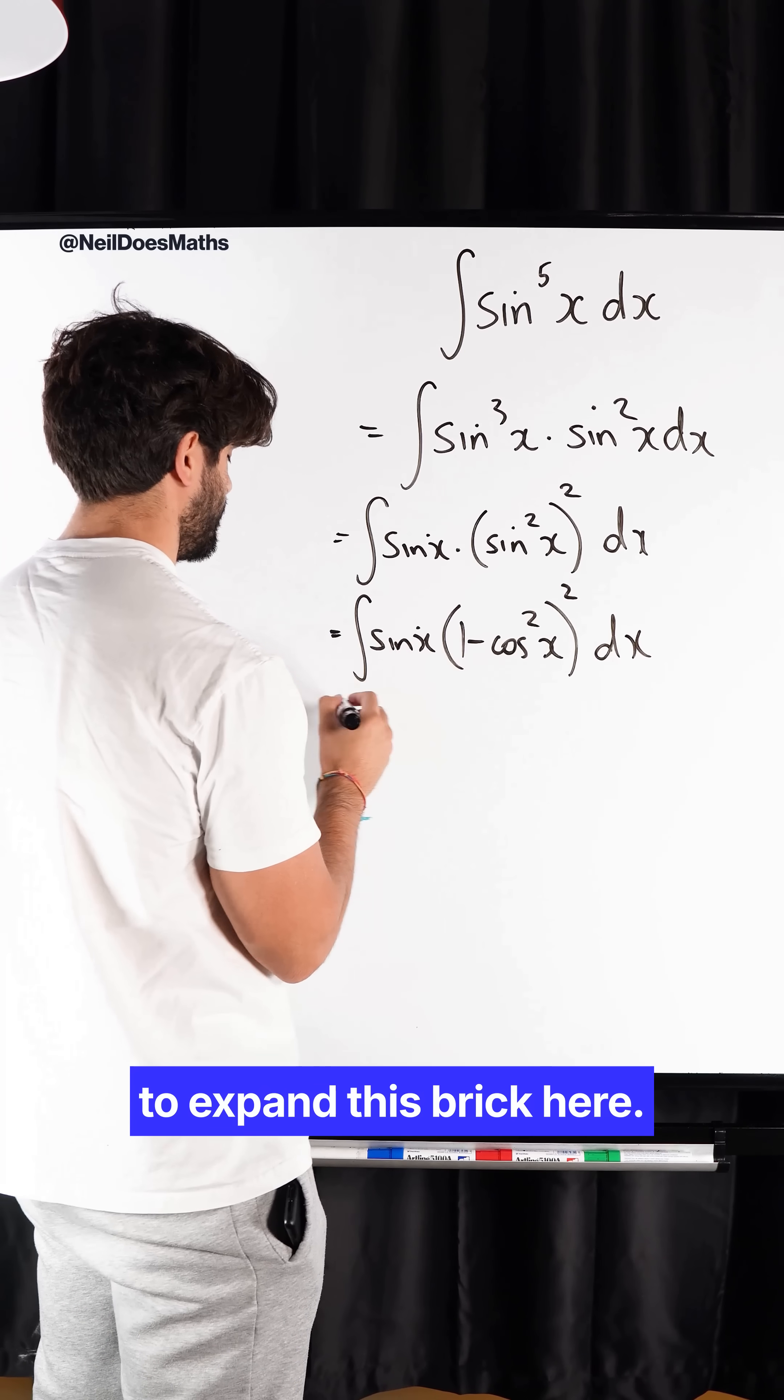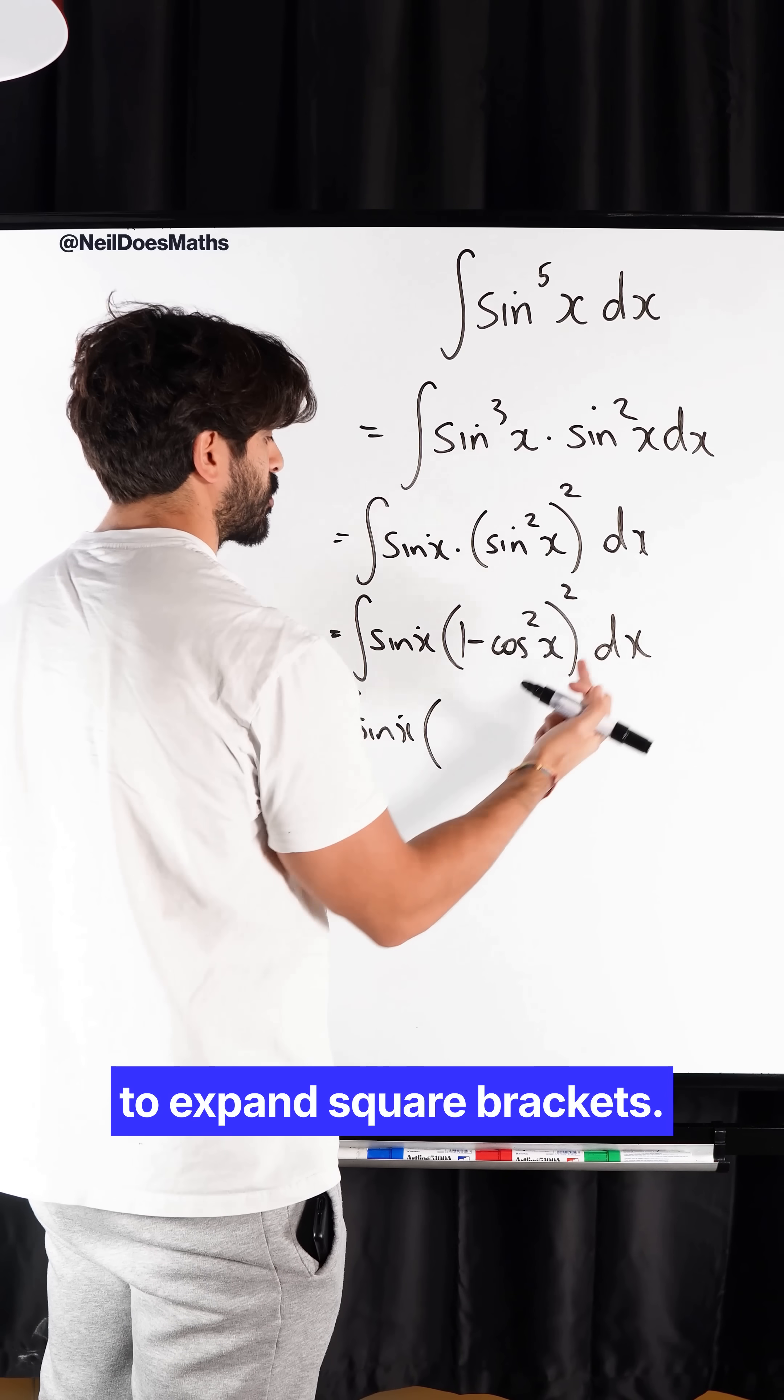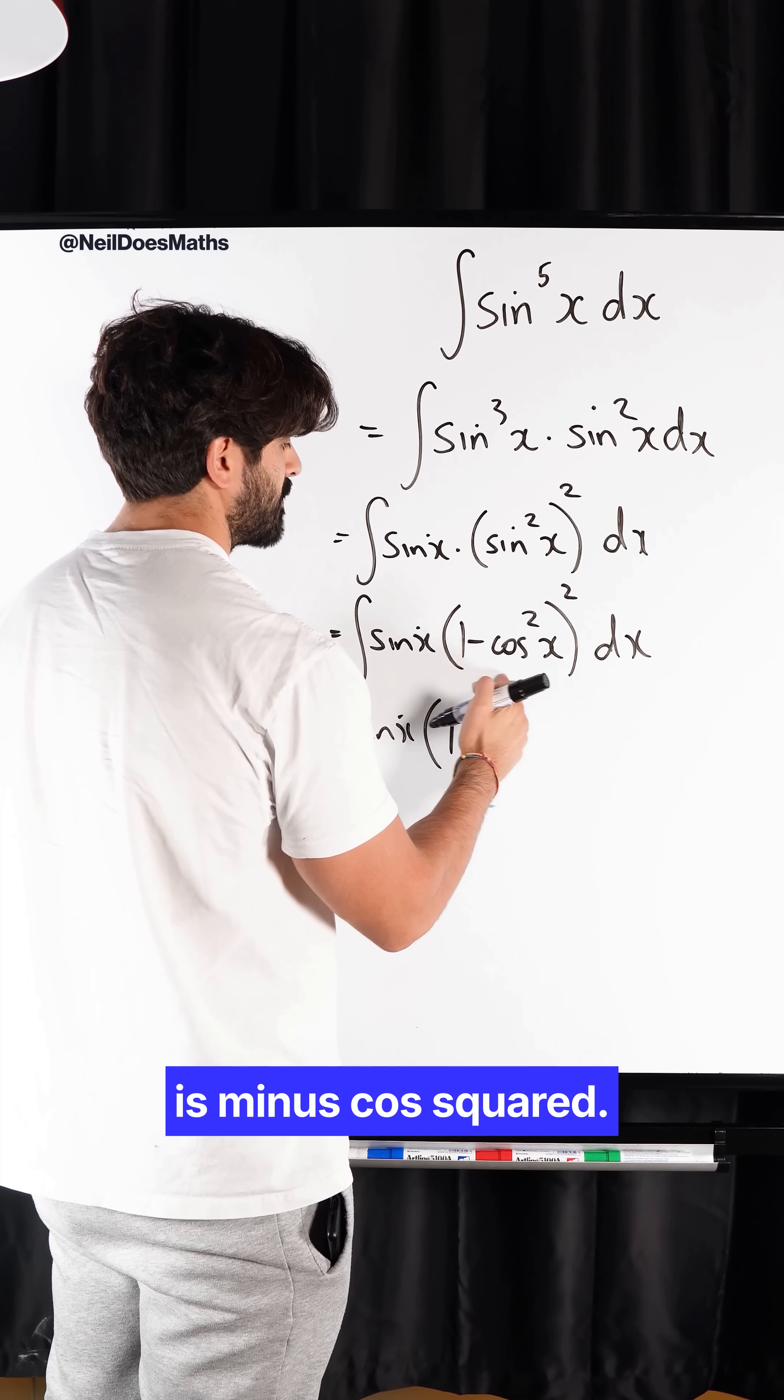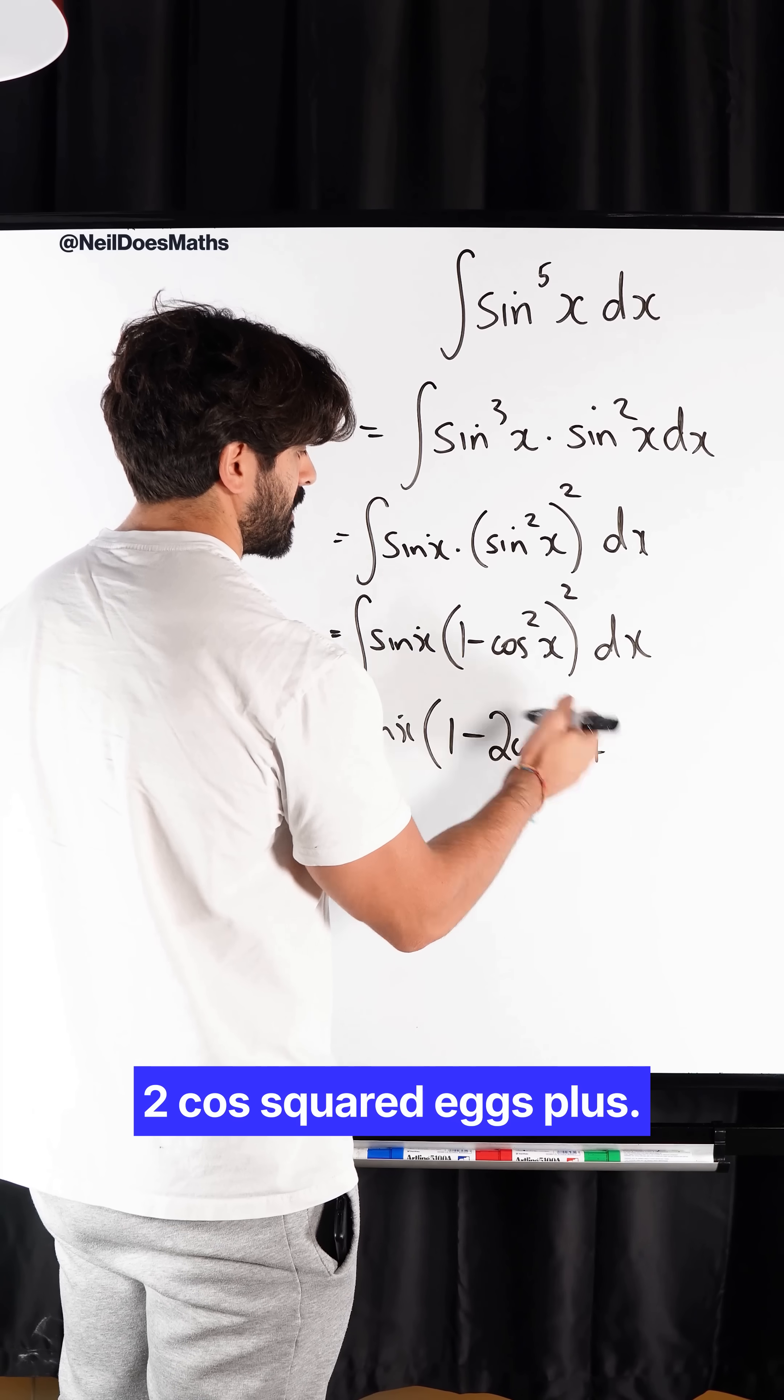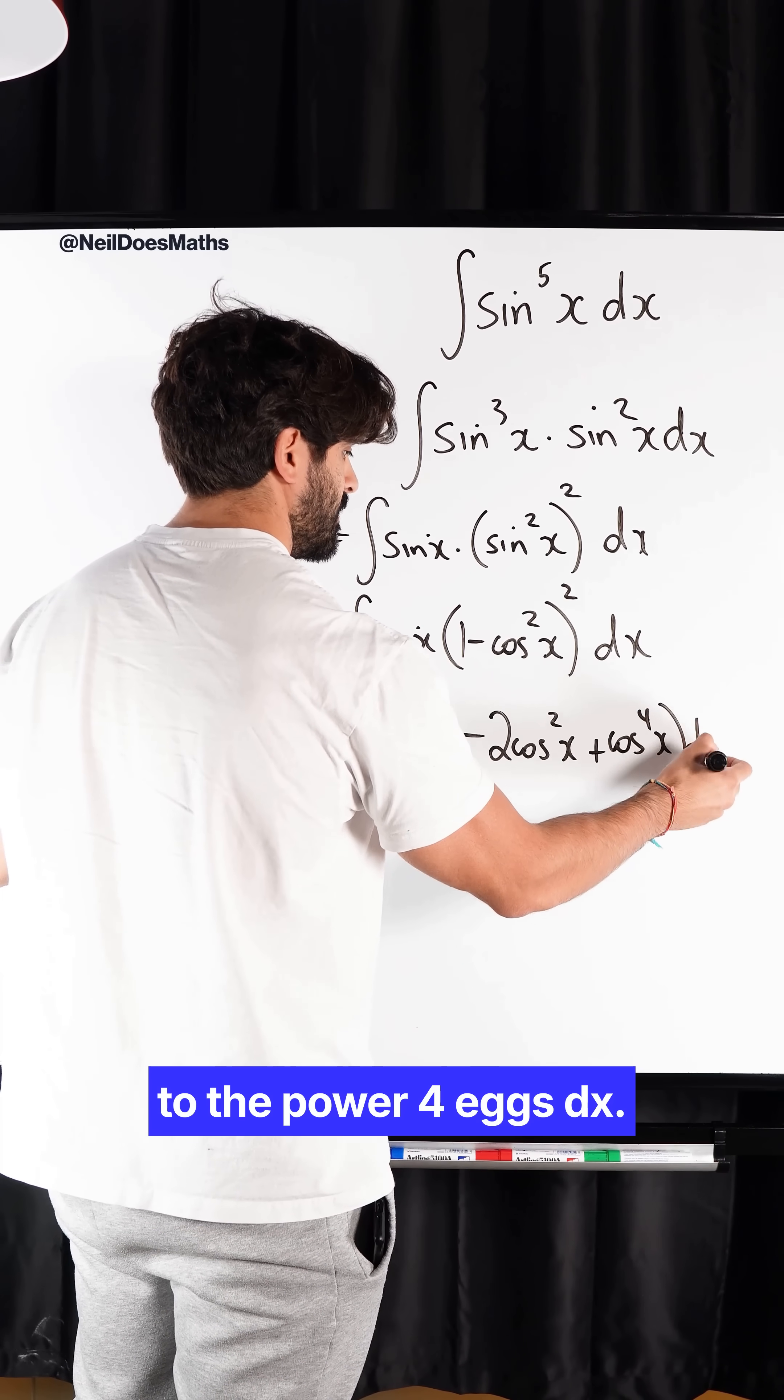Now I just need to expand this. So I get sin x times—to expand square brackets, super simple. We do 1 squared minus. Multiply these together is minus cos squared. Then we double it. Minus 2 cos squared x. Plus, then we square this cos to the power 4 x dx.